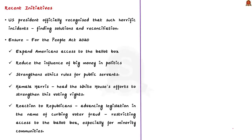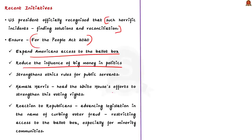US President Biden officially recognized that such horrific incidents happened, saying he doesn't want US citizens to pretend none of it occurred or hide the dark sides, as that would prevent finding solutions and reconciliation. Speaking from Tulsa on the 100th anniversary of the massacre, Biden said he would fight with every tool at his disposal to ensure the Senate passed its version of the voting rights bill — the For the People Act 2020 — which aims to expand Americans' access to the ballot box, reduce the influence of big money in politics, and strengthen ethics rules for public servants.